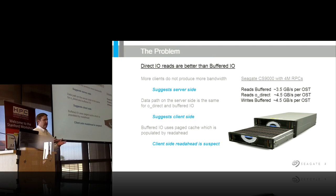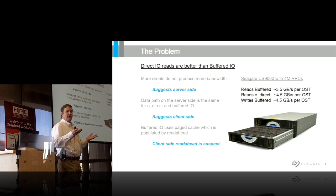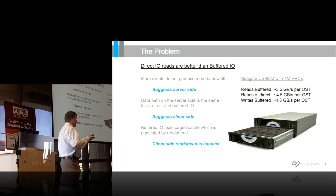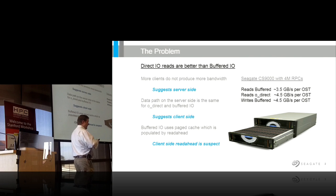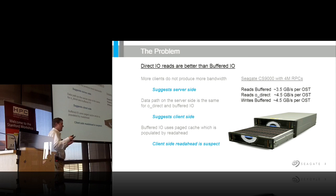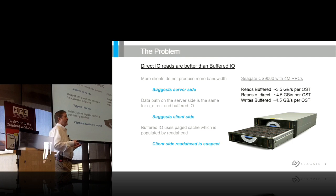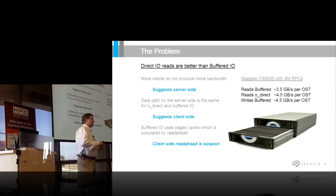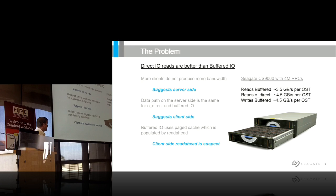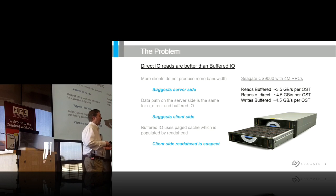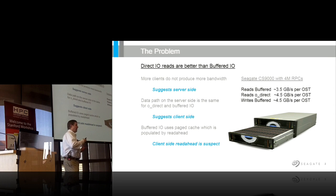I threw as many clients at it as I could — lots of clients in the lab — and the performance didn't improve at all. That suggests maybe the problem is server-side. But there's not much difference between direct I/O and buffered I/O on the server side; the data path should be about the same. So that suggests the problem is client-side. The real difference with buffered I/O is you're reading from the Linux buffer cache rather than directly to storage.